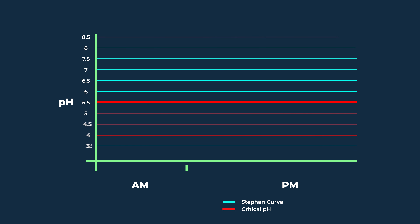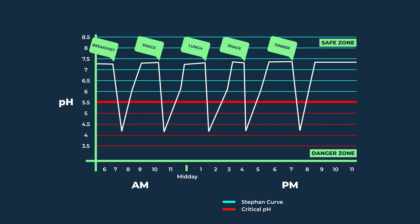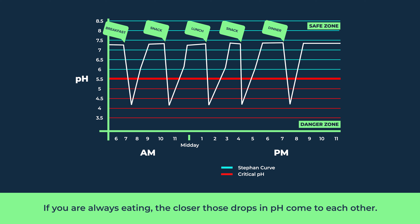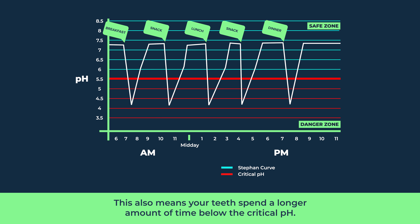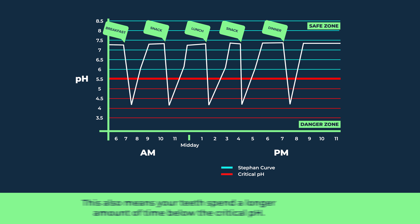The number of times in a day that you eat greatly affects cavities. Eating many meals — and I include snacks as a meal — will greatly affect the amount of cavities you get. This diagram is called the Stefan curve. Every time you eat, the pH of your plaque drops and goes back up. If you're always eating, those drops in pH come closer together, meaning your teeth never have appropriate time to remineralize. Each demineralization attack becomes worse, and you never get recovery because the bacteria is always keeping the pH low. Your teeth spend a longer time below the critical pH, making cavities more likely.